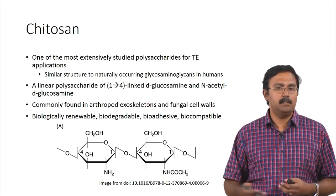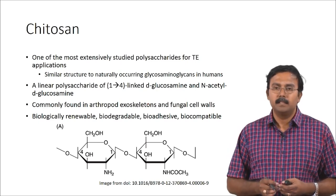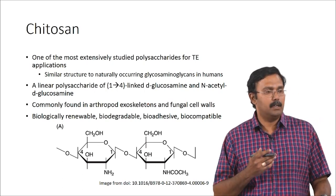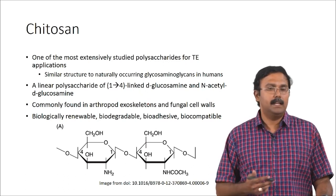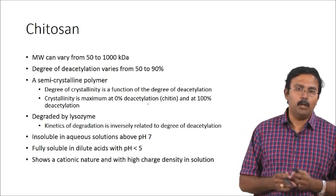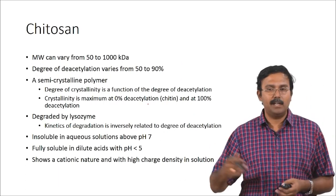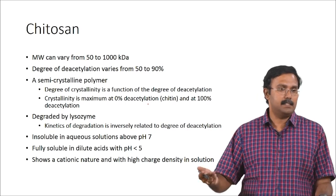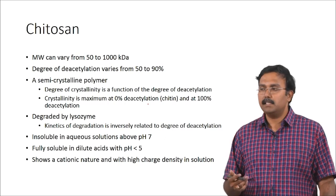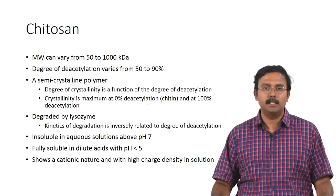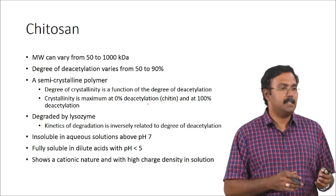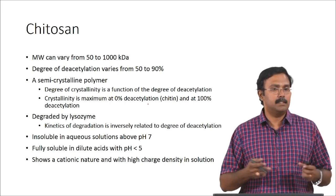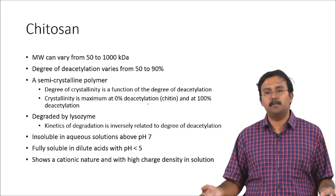Chitosan is also biodegradable, bioadhesive, and biocompatible. For these reasons people have actually explored chitosan extensively. It is basically a linear polysaccharide of 1,4-linked glucosamine and N-acetyl glucosamine. The molecular weight can range anywhere from 50 kilodaltons to 1000 kilodaltons. You also have deacetylation of chitin — chitin is acetylated, and when you deacetylate chitin you get chitosan. The degree of deacetylation can vary from 50 to 90 percent. It is a semi-crystalline polymer and the degree of crystallinity is a function of the degree of deacetylation — it is actually very high at both 0 percent and 100 percent deacetylation, and is semi-crystalline in between.